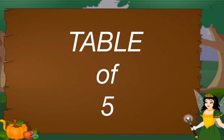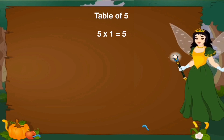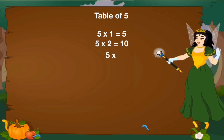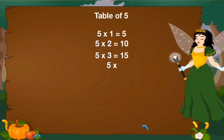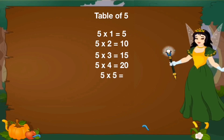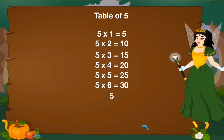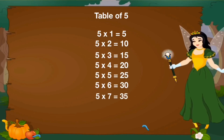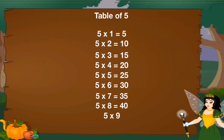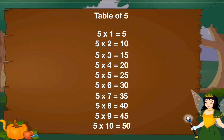Let's revise table of 5. 5 1's are 5, 5 2's are 10, 5 3's are 15, 5 4's are 20, 5 5's are 25, 5 6's are 30, 5 7's are 35, 5 8's are 40, 5 9's are 45, 5 10's are 50.